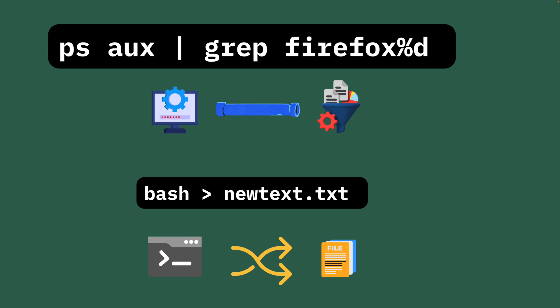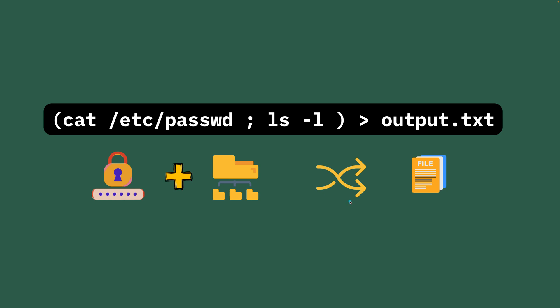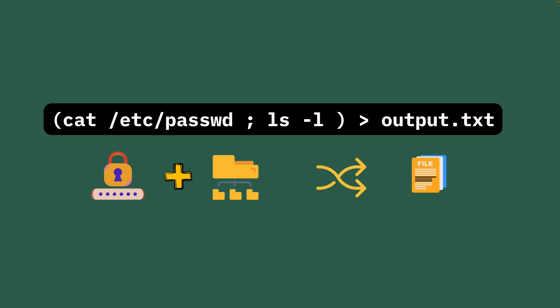You can also redirect the bash terminal itself to a new text file. All the output of bash gets redirected so nothing is printed to the terminal. A compound command example uses parentheses: you can cat the password file and do ls-l together as a compound, then output everything to an output.txt file. This compound command approach is very helpful in bash.